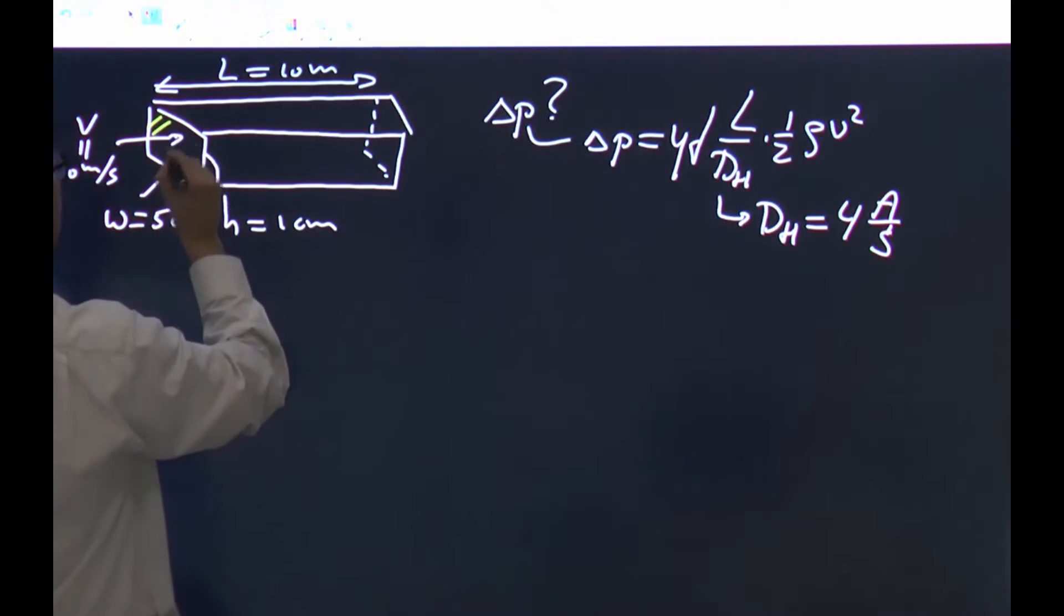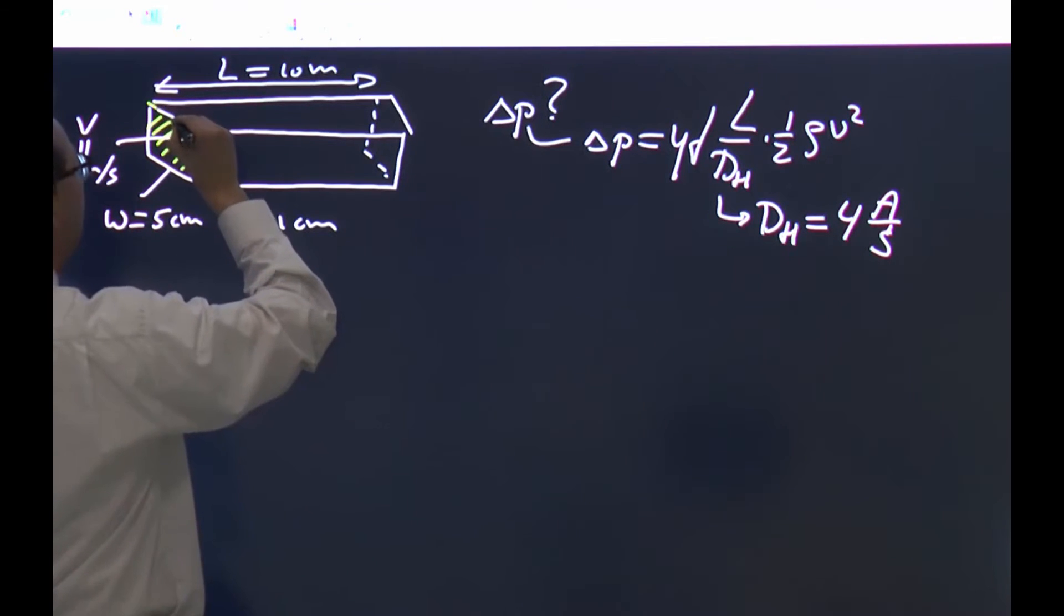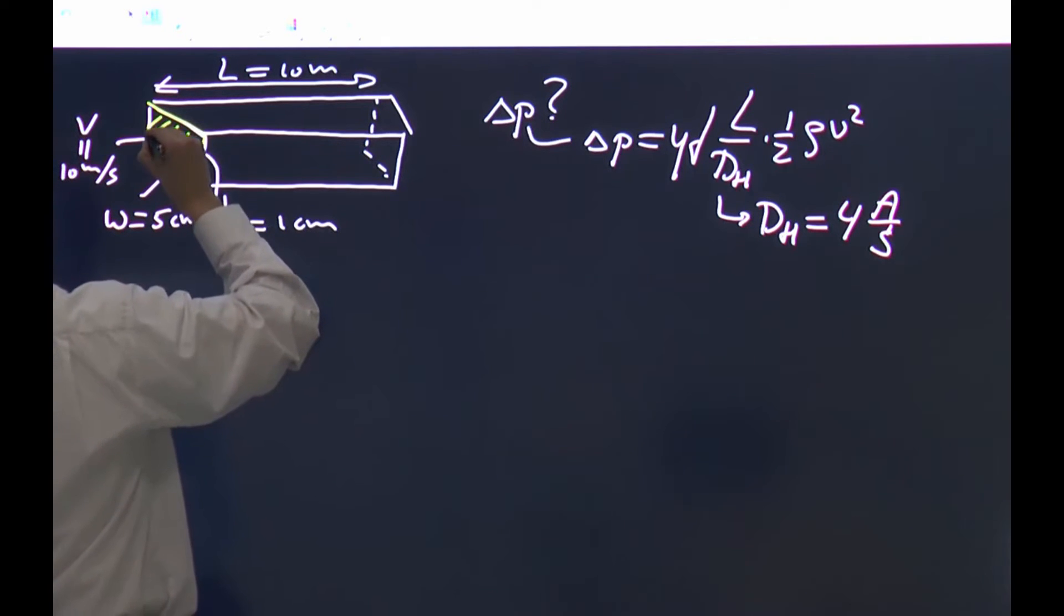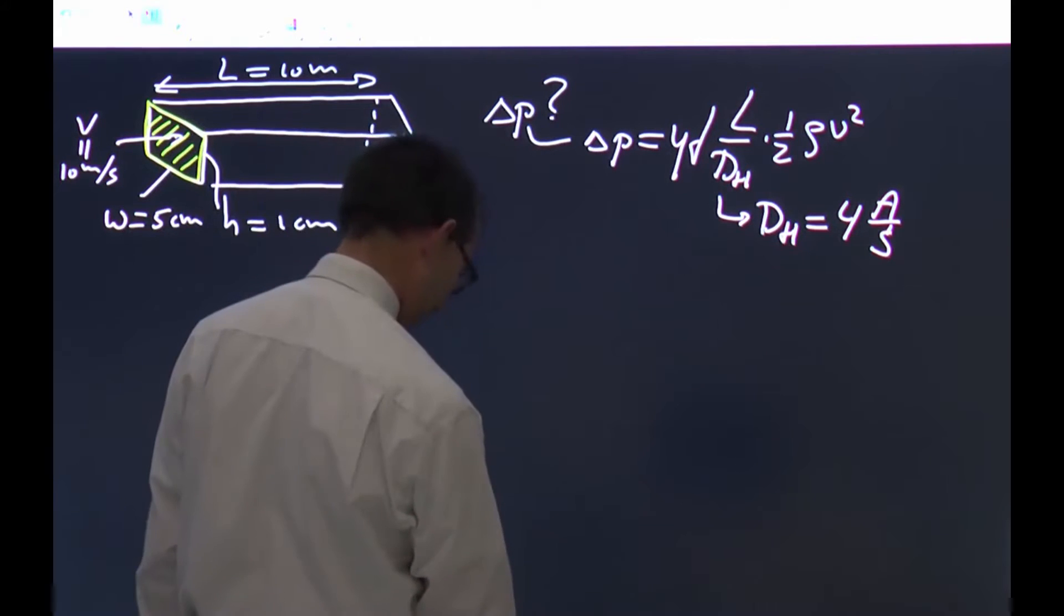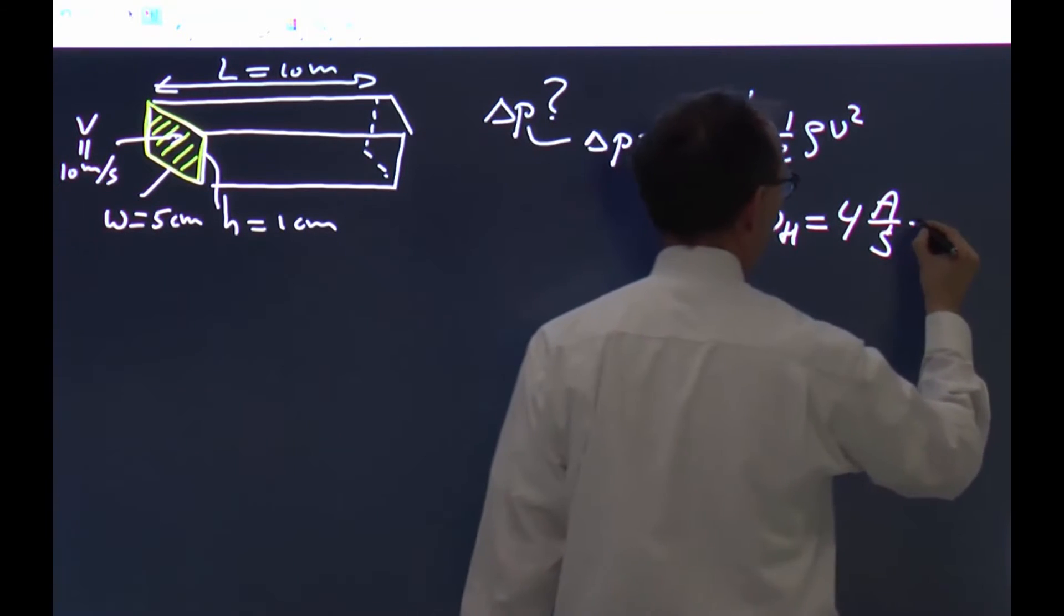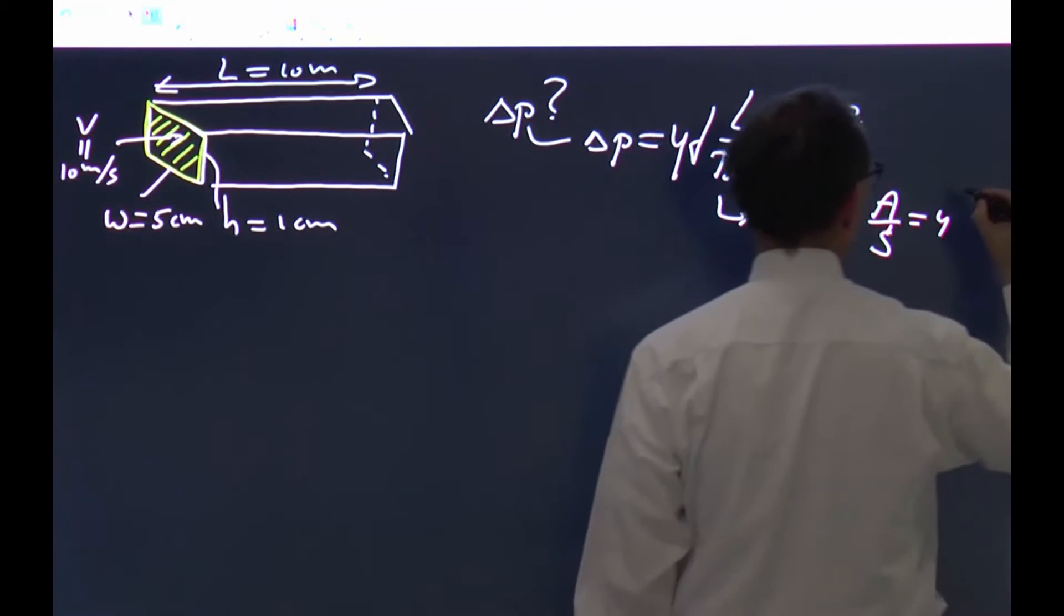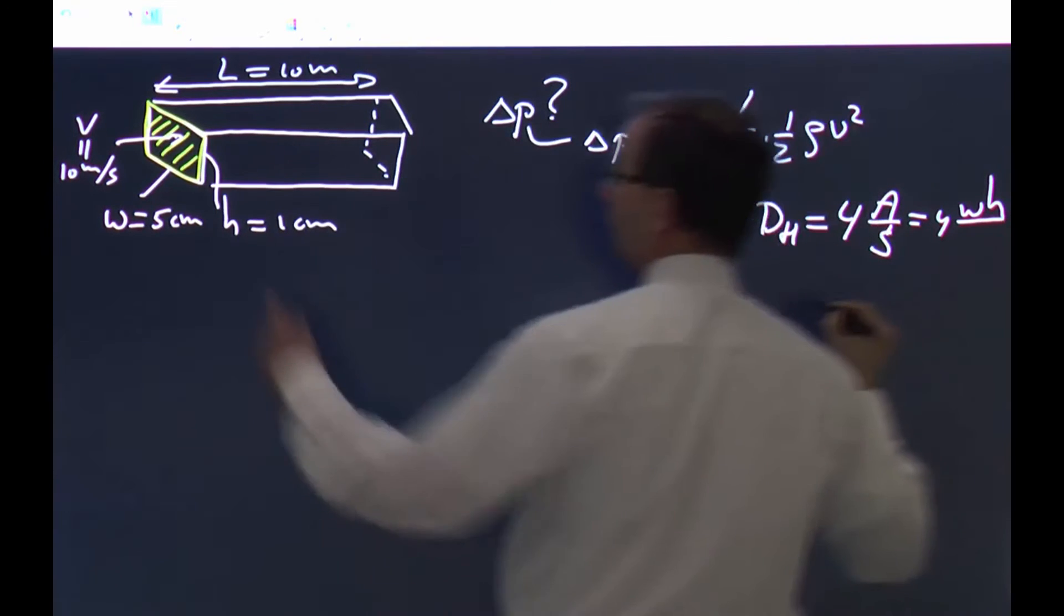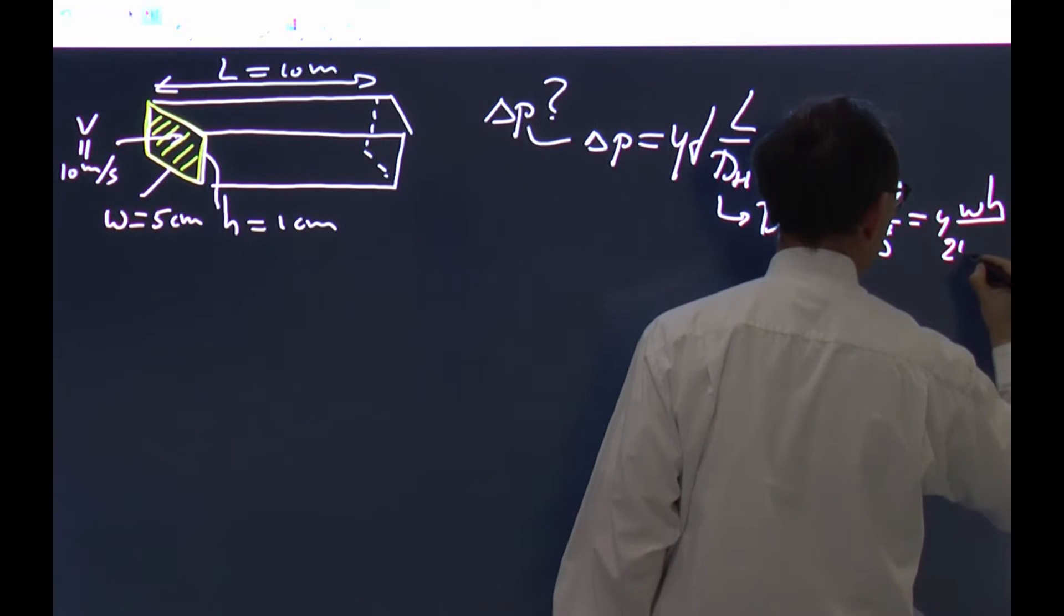This is divided by s, which is the wetted perimeter, which is going to be the four sides. So I have that this is four times the dashed area, which is width times height, divided by the four walls, the length of that, which is 2 times w plus 2 times h.